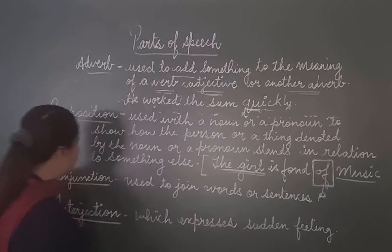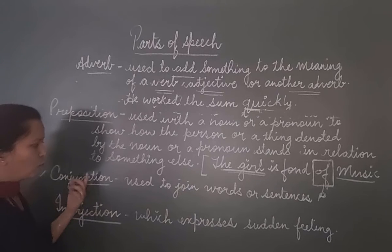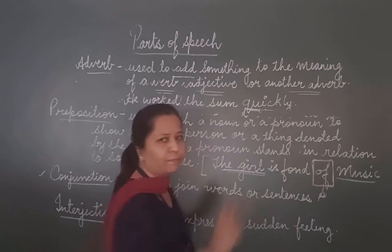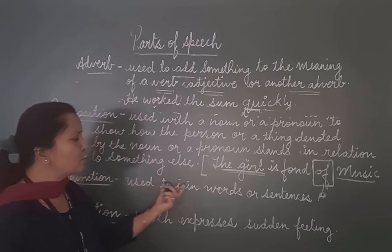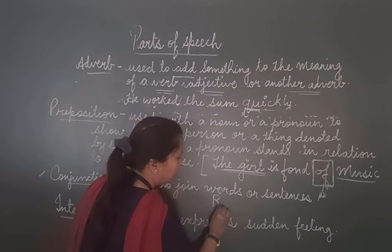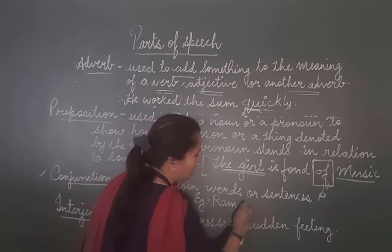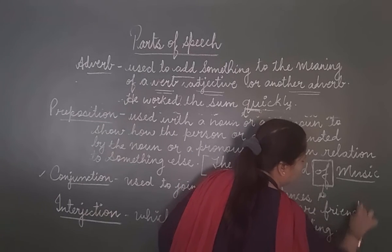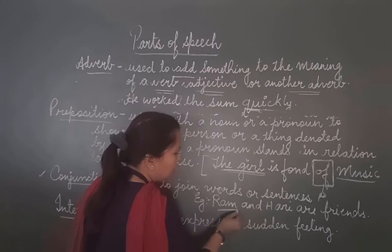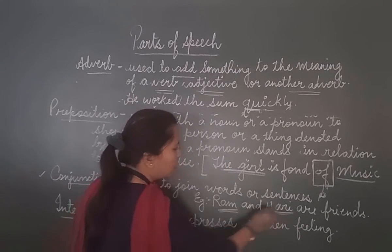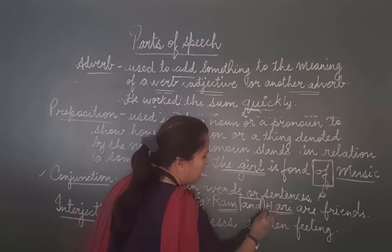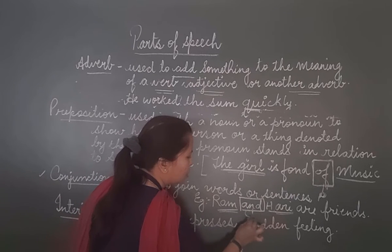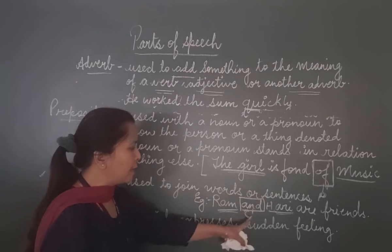Now let's study the next part of speech, and that is conjunction. What is the definition of a conjunction? It is a word which is used to join words or sentences. For example: 'Ram and Hari are friends.' Here, 'and' is joining two words — Ram and Hari — and therefore 'and' becomes a conjunction.